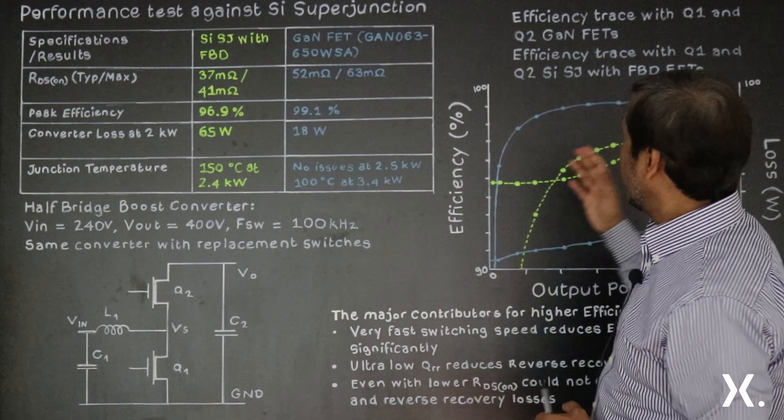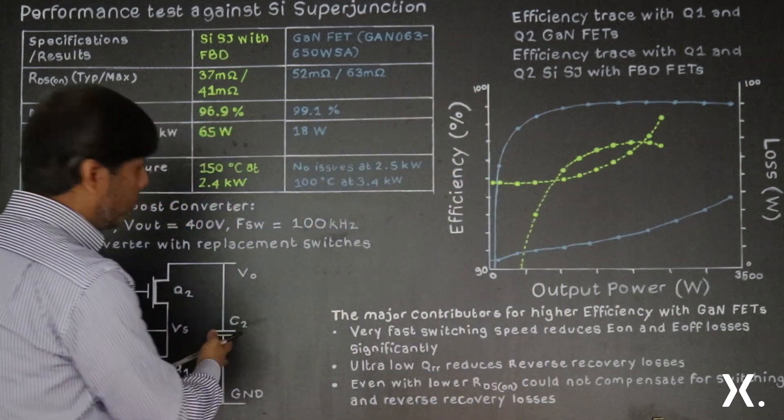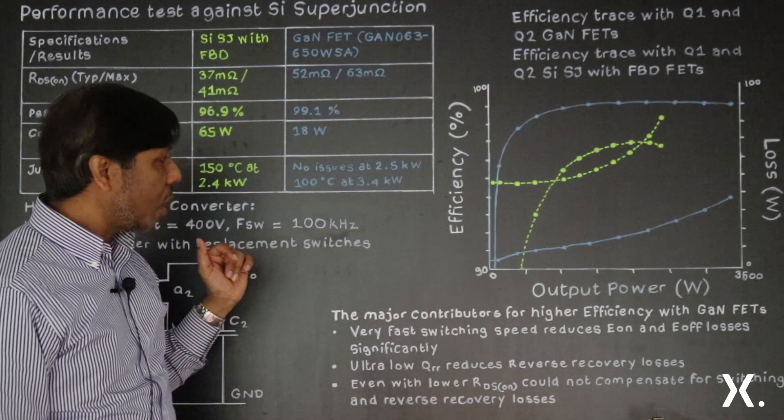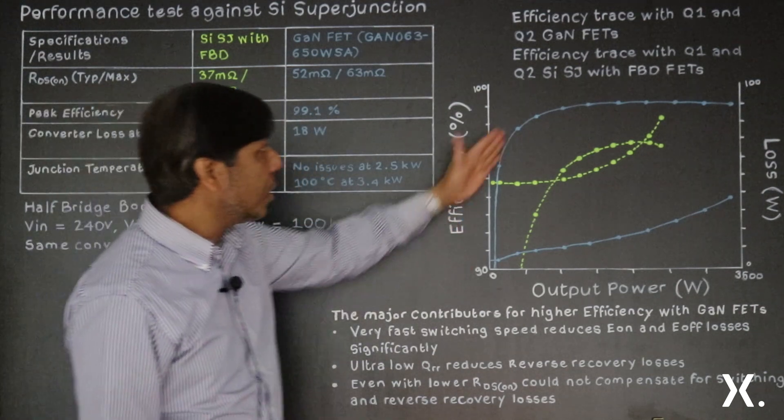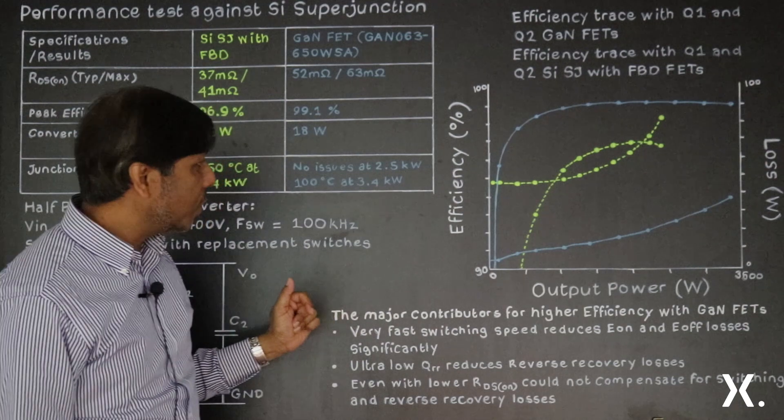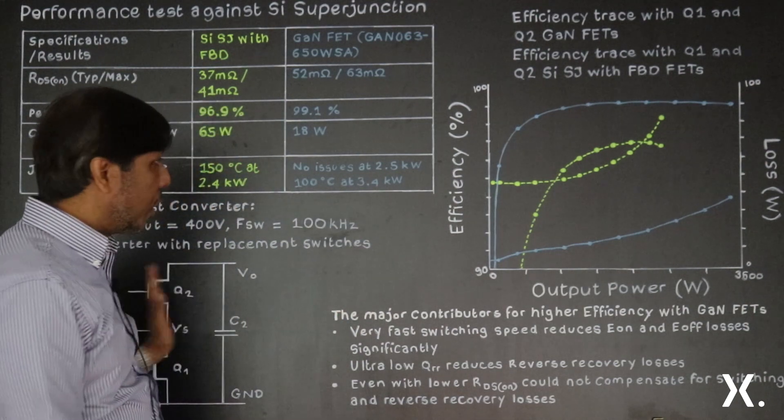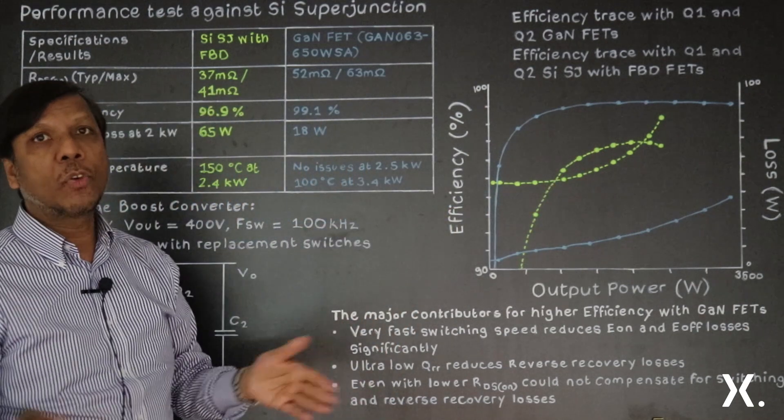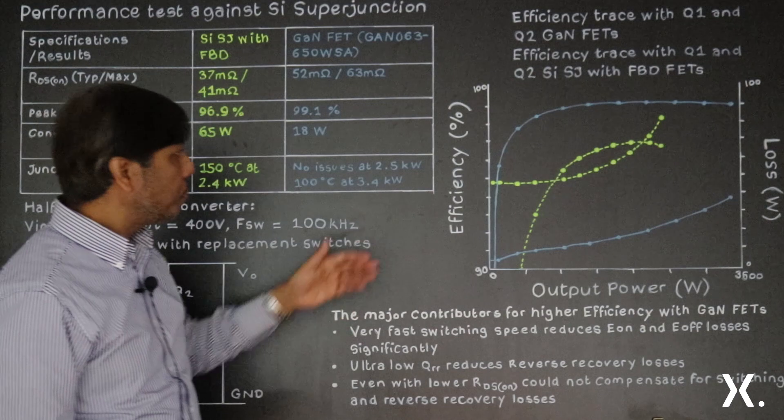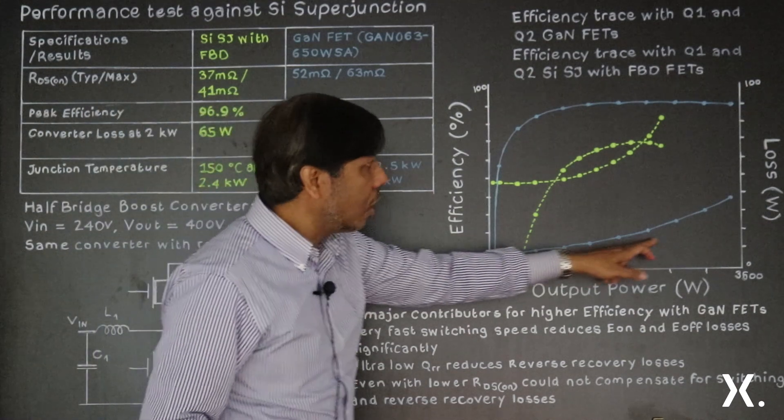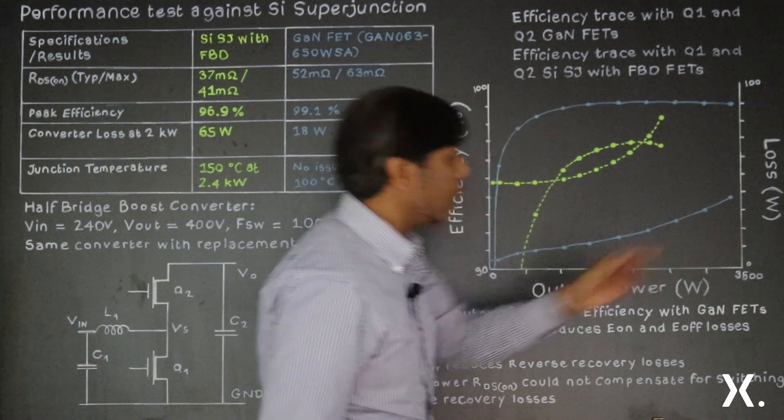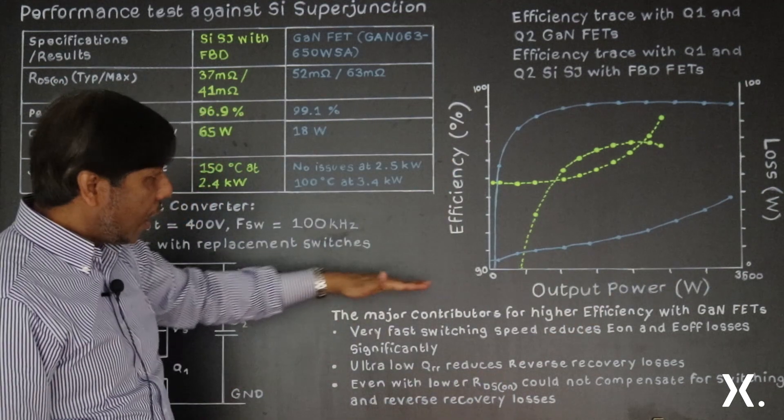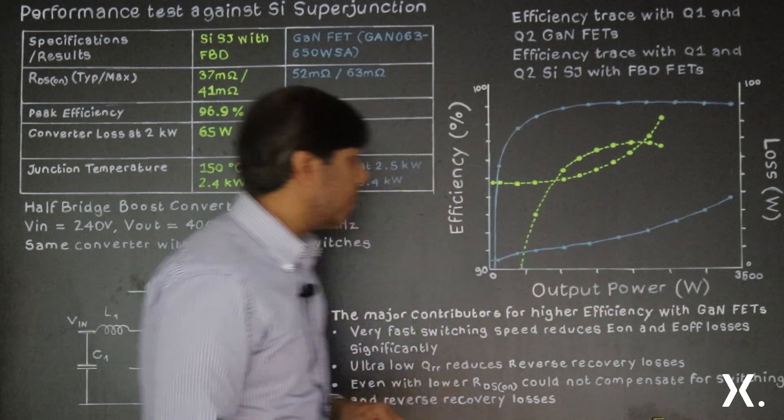Just looking into the performance of this half-bridge, you can see that the blue line is the gallium nitride-based performance curve, which is the efficiency curve for the gallium nitride-based configuration. And the green line is the efficiency curve for silicon-based. These are the power loss curves with the power loss axis on the right-hand side and the efficiency on the left-hand side. And the x-axis is 0 to 3.5 kilowatts.